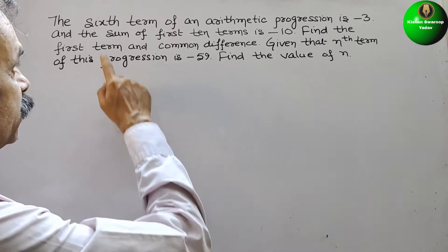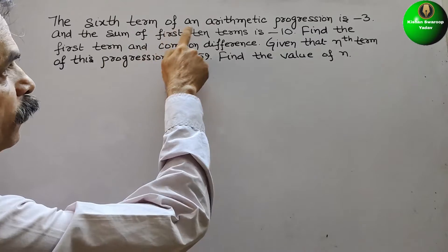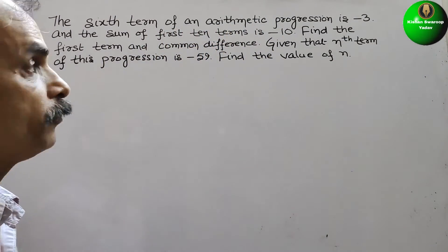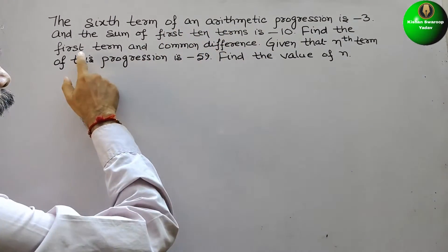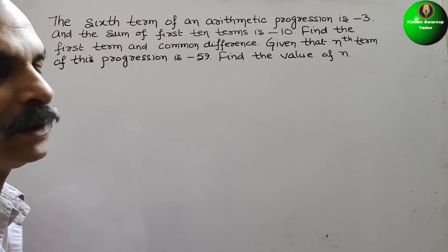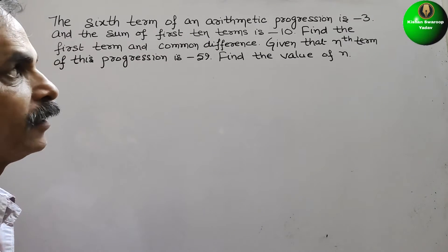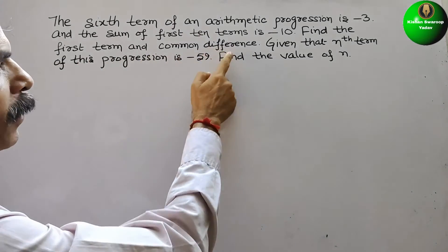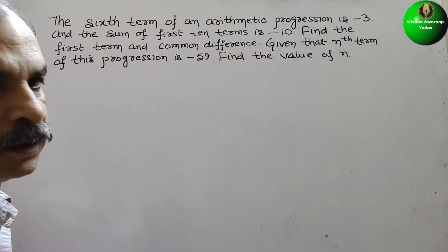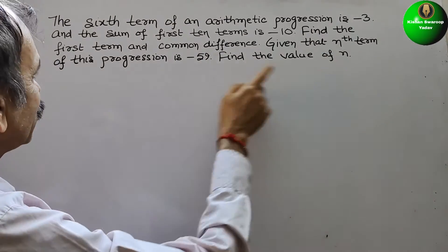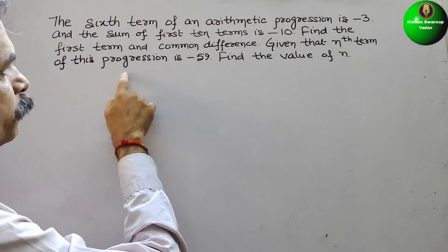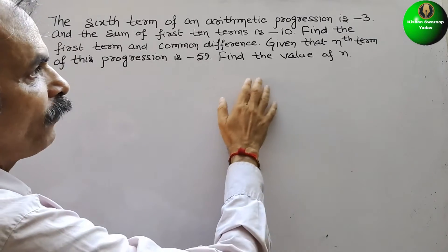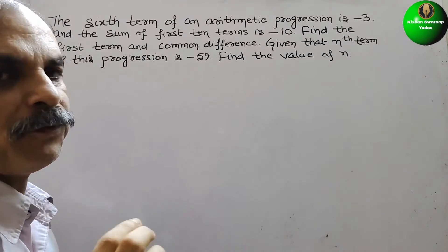The question is: the sixth term of an arithmetic progression is minus 3, and the sum of the first 10 terms is minus 10. Find the first term and common difference. Given that the nth term of this progression is minus 59, find the value of n.